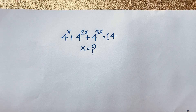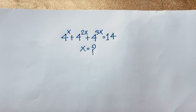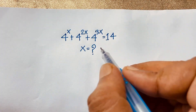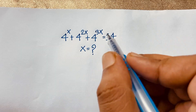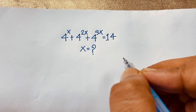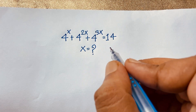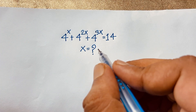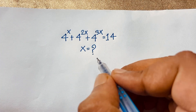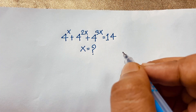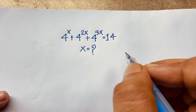Hello everyone, welcome to Russia's Classroom. Today we are solving a nice maths olympiad question. The question is: 4 to the power x plus 4 to the power 2x plus 4 to the power 3x is equal to 14. Find x. How to solve this interesting exponential maths olympiad question?